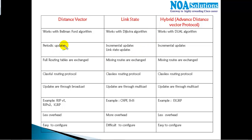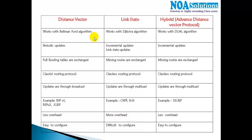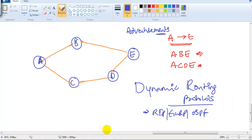One major difference between these protocol categories is the algorithm used. Distance vector protocols use the Bellman-Ford algorithm. Link state protocols use Dijkstra's algorithm. EIGRP uses the Diffusion Update Algorithm, or DUAL. The algorithm is the calculation or process used for selecting the best route through the complete routing protocol procedure.